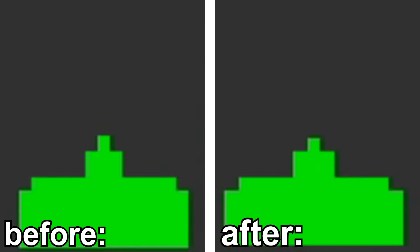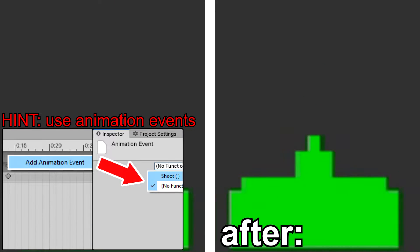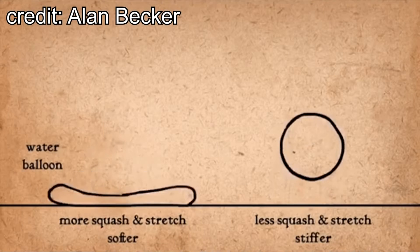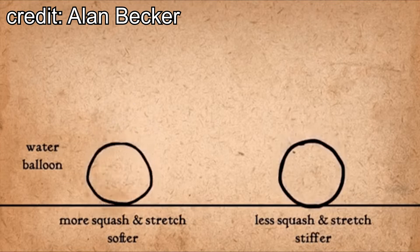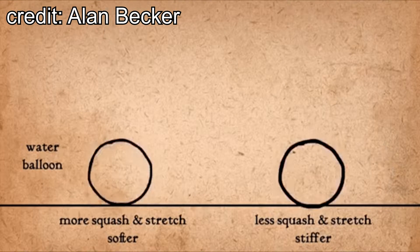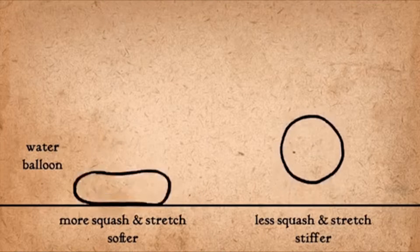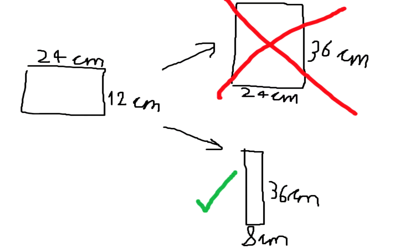The more squash and stretch you add, the squishier an object looks. So absolutely don't do this with objects like metal crates or something, because that will just look wrong. Also keep in mind the proportions of an object, because you don't want to shrink or grow it unevenly — if you make the length bigger you should make the width smaller, not just change the length without adjusting the width.